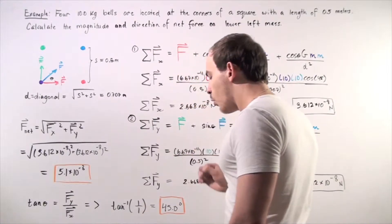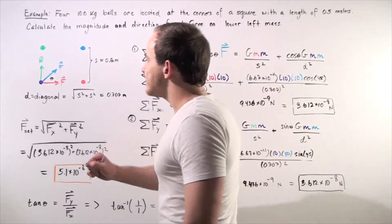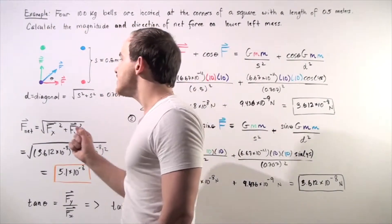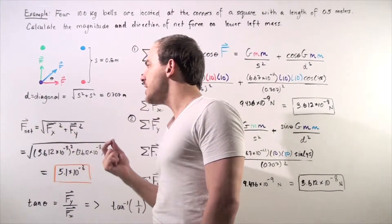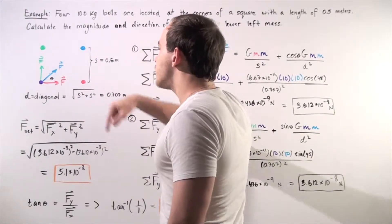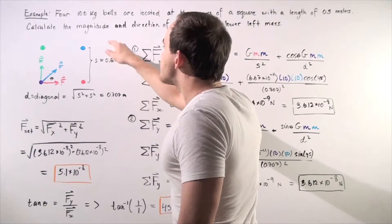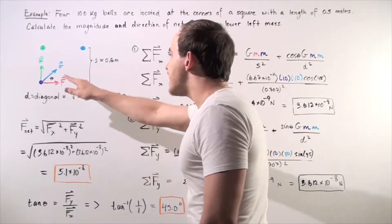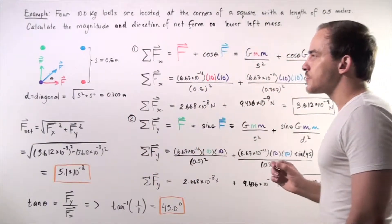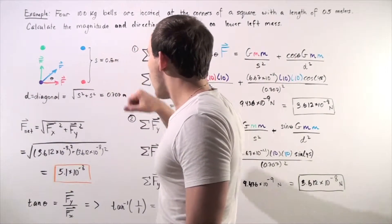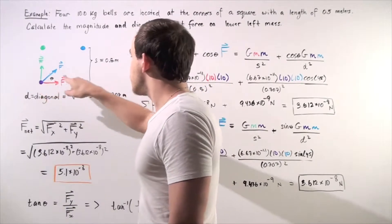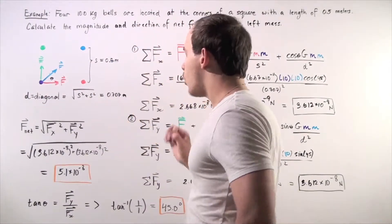Each side is 0.5 meters. The distance from the purple to the blue ball, or from the red ball to the green ball, is the diagonal D, given by taking the square root of the sum of the squares of the sides. So we take 0.5 squared, multiply by 2, and take the square root, which gives us 0.707 meters. The distance from the purple to the red and from the purple to the green is 0.5 meters.